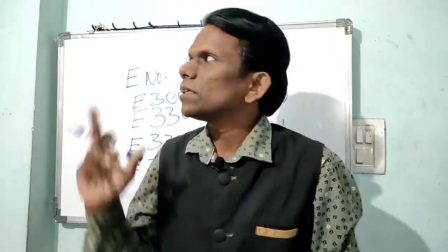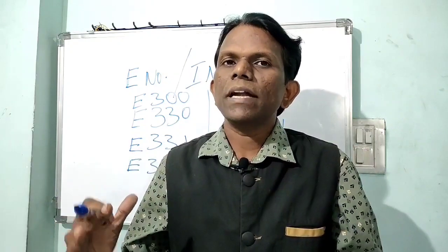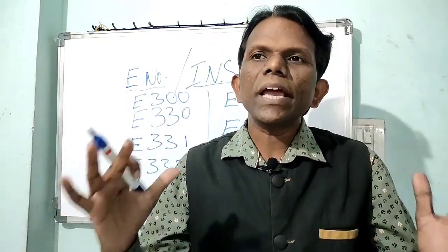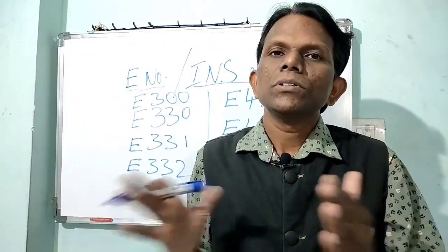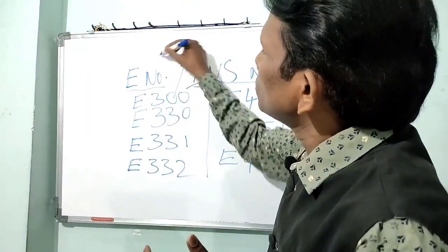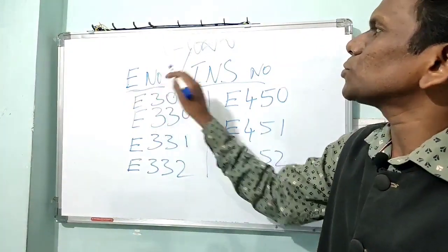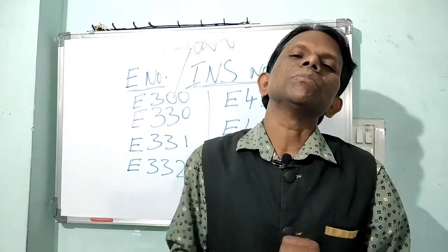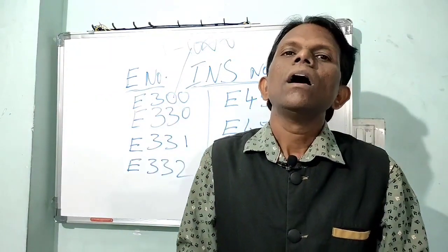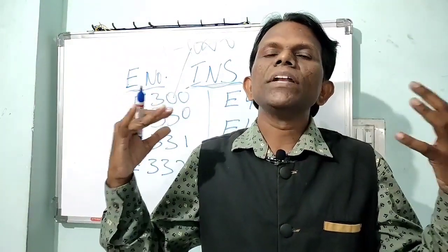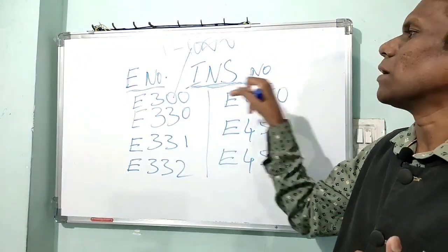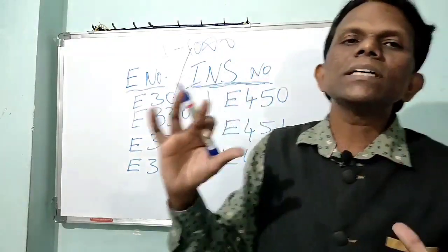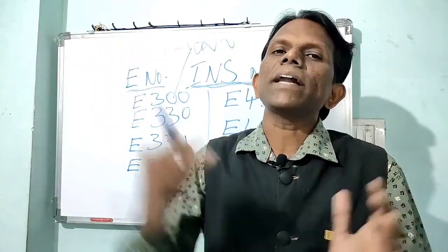There are E numbers and INS numbers. E numbers were developed by the European Economic Community — each food additive is allocated a particular number starting from 001 to 1000, and these are used in European countries. INS numbers, the International Numbering System, were developed by the Codex Alimentarius Commission and are broadly accepted worldwide. All food ingredient labeling must mention the INS number. Both systems are the same, but E numbers use the 'E' prefix while INS numbers use only the number.